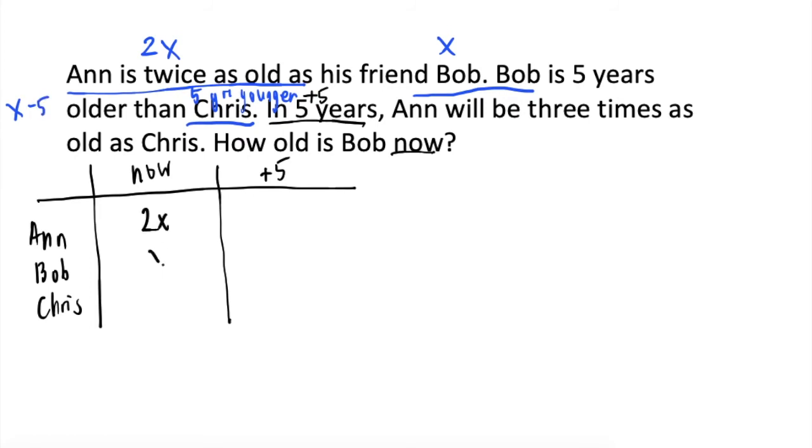So, if ito ang present ages nila, in five years, matadagdagan lahat ng plus five. So, ito ay equal lang sa x. Now, balik tayo sa problem. In five years, Ann will be three times as old as Chris.